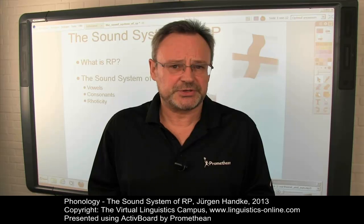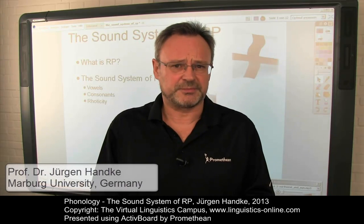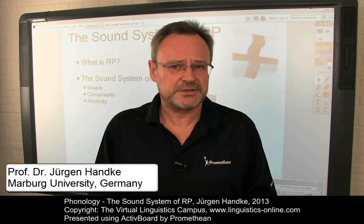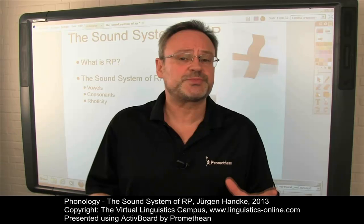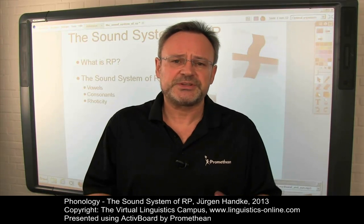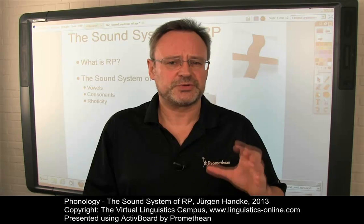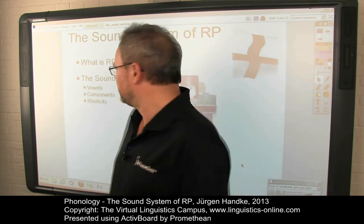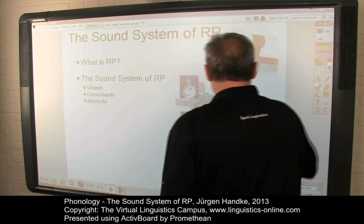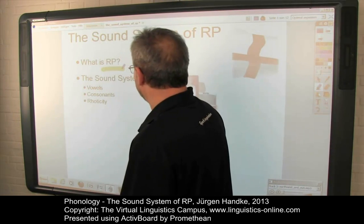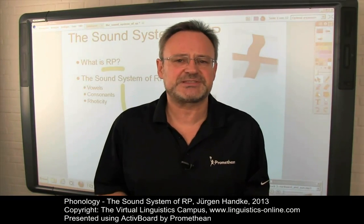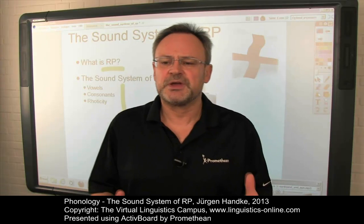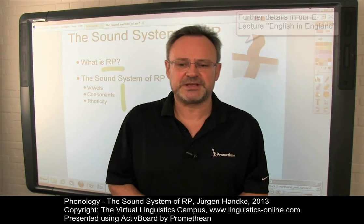There are two main varieties of English spoken in the United Kingdom, associated with England and Scotland. In this e-lecture we will concentrate on the English spoken in England and will discuss its main phonological dialect, Received Pronunciation. We will first provide a short overview of RP and will then look at each phoneme of RP in detail, pointing out typical aspects that distinguish RP from other phonological dialects of present-day English.